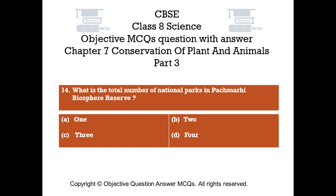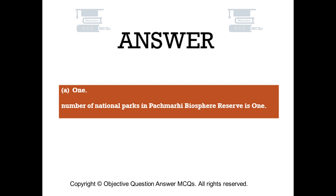Question number 14. What is the total number of national parks in Pachmarhi Biosphere Reserve? The right answer is Option A: 1. The number of national parks in Pachmarhi Biosphere Reserve is 1.